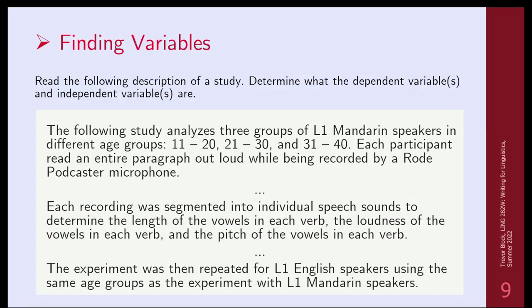Here's an example. The following study analyzes three groups of L1 Mandarin speakers — potentially an IV if it's manipulated across age groups: 11 to 20, 21 to 30, and 31 to 40. So age groups is an independent variable because the researcher is choosing participants and sorting them — this is in their control.